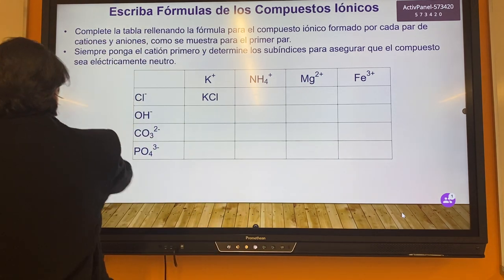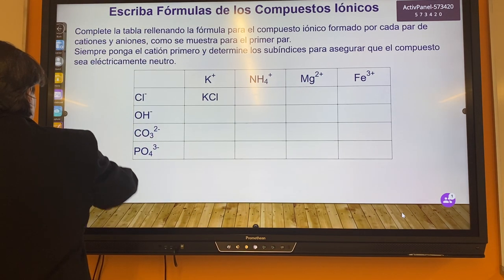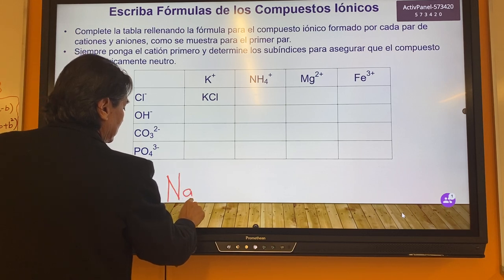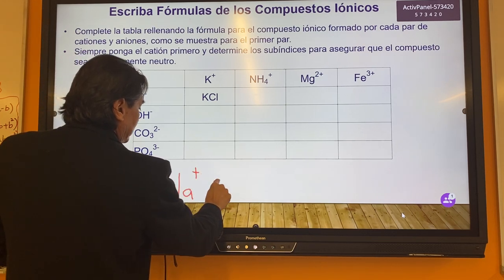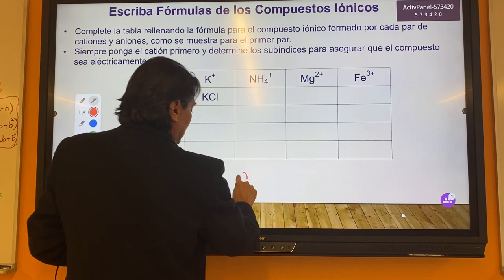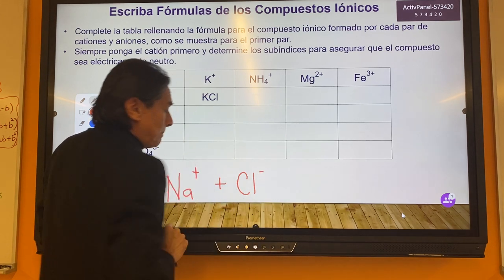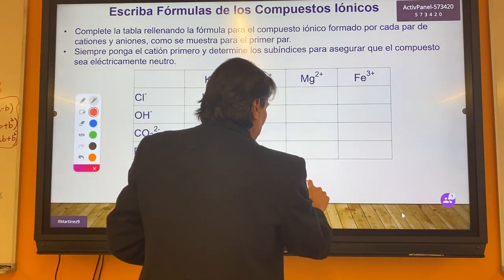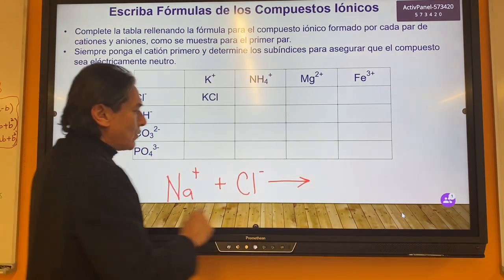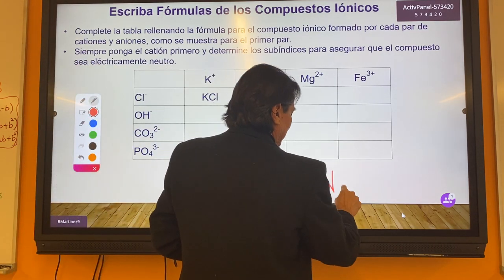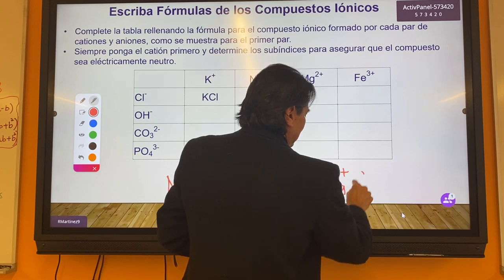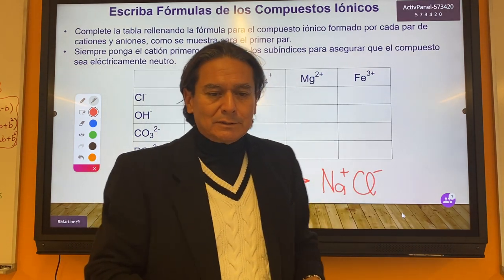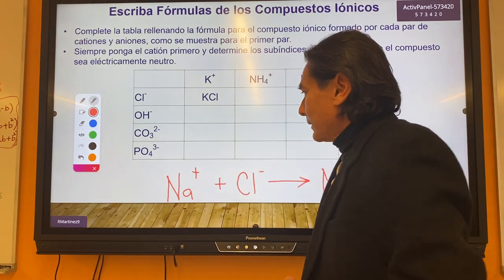For example, you can take sodium metal, which is positive, plus chlorine, minus. If you mix them together, you will form sodium chloride. This is also known as table salt.